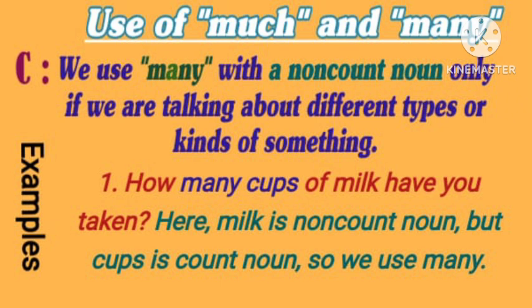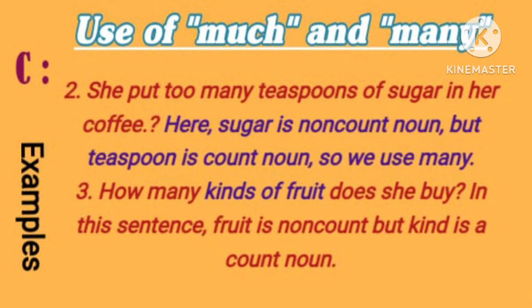We use many with a non-count noun only if we are talking about different types or kinds of something. 1. How many cups of milk have you taken? Here, milk is a non-count noun, but cups is a count noun, so we use many. 2. She put too many teaspoons of sugar in her coffee. Here, sugar is non-count, but teaspoon is count, so we use many. 3. How many kinds of fruit does she buy? In this sentence, fruit is non-count, but kind is a count noun.